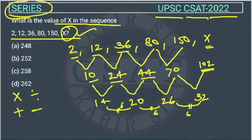And this 102 is the difference between 150 and X. So the value of X will be what? The value of X will be the addition of these two. So this will be X will be 150 plus 102. So this will be 252.